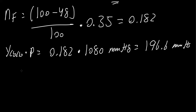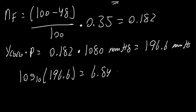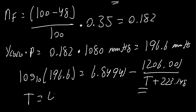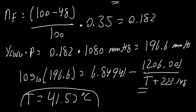From here, we use the same Antoine's equation: log base 10 of 196.6 equals 6.84941 minus 1206.001 divided by (T plus 223.148). Using the same method on the TI-Nspire, temperature equals 41.57 degrees Celsius. And that's all we need to do for these two problems.